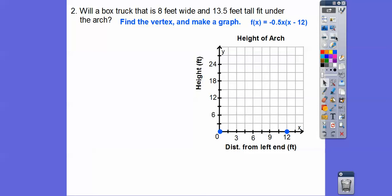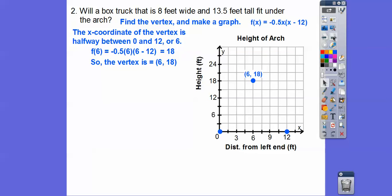So find the vertex and make a graph. The vertex is going to be, if the intercepts are at x = 0 and x = 12, then the vertex is halfway between 0 and 12, which is going to be at that 6 right there. So plug in 6. I plugged in 6 right there and 6 right there. So half of 6 is 3 and then 6 - 12 is -6. So actually it's -3 × -6, so that gives me a positive 18, a negative times a negative. So there's the vertex right there.